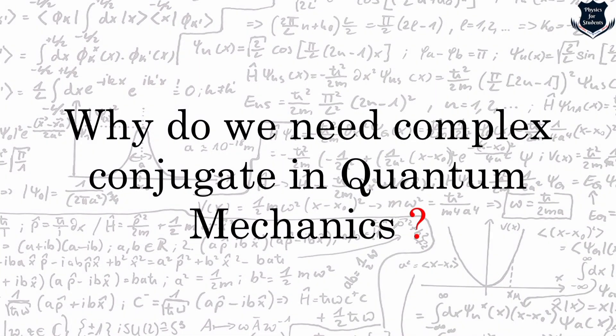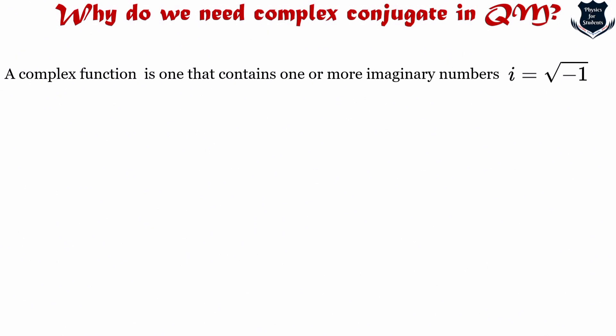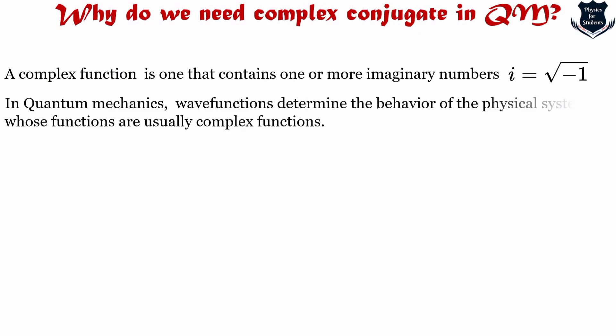Now that we have understood what a complex conjugate is, we need to understand why we need it in quantum mechanics. A complex function is one which contains i = √(−1). Wave functions determine the state of the physical system and are complex functions.